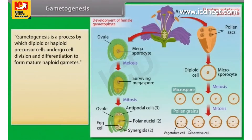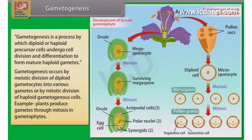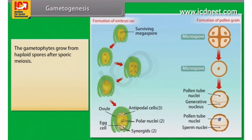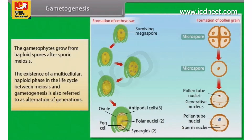Gametogenesis is a process by which diploid or haploid precursor cells undergo cell division and differentiation to form mature haploid gametes. Gametogenesis occurs by meiotic division of diploid gametocytes into various gametes, or by mitotic division of haploid gametogenous cells. For example, plants produce gametes through mitosis in gametophytes. The gametophytes grow from haploid spores after sporic meiosis. The existence of a multicellular haploid phase in the life cycle between meiosis and gametogenesis is also referred to as alteration of generations.